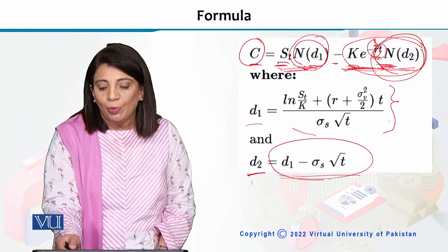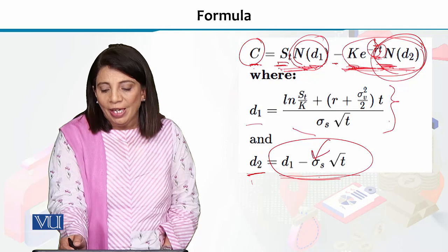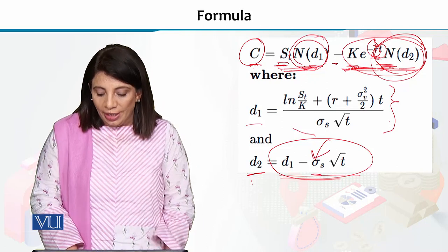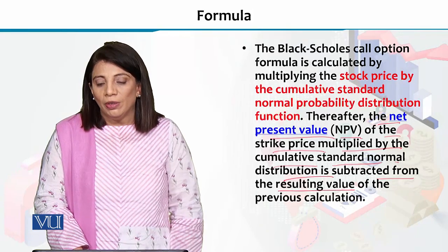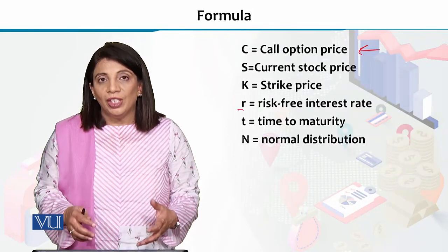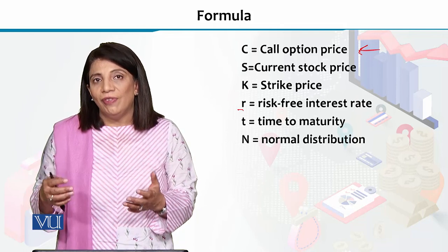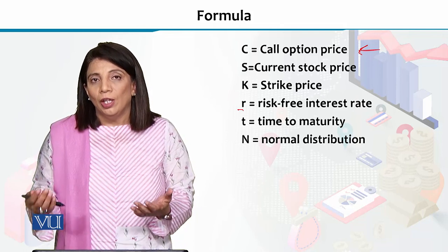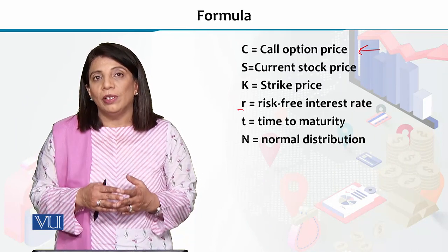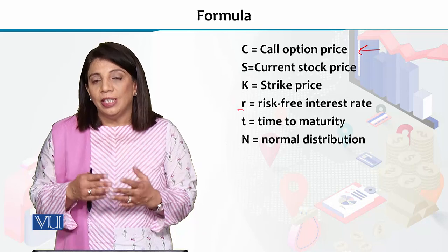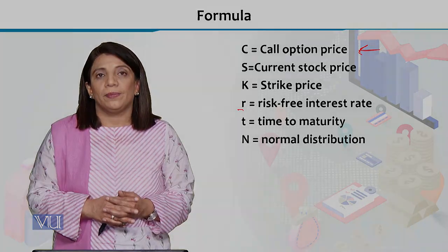D2 is obtained using sigma, which is an indicator or measure of volatility. Together, you find out the values of these five variables and plug them into this particular formula, and you can find out the call option price. This way you can also calculate the put option price.